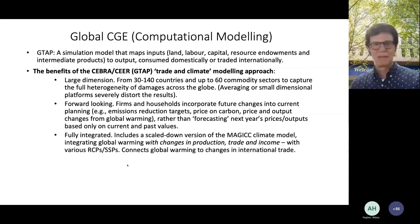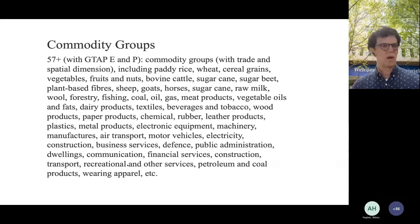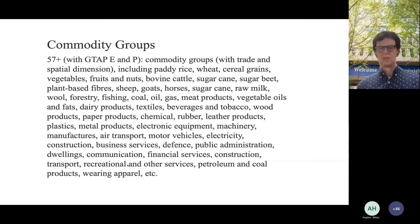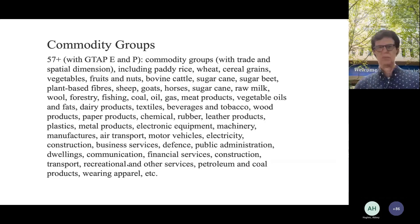There are approximately 57 to 65 different commodity groups in the model, depending on the version used. It's pretty heavy in agriculture, which is good for biosecurity concerns, but it also covers manufacturing, energy production including fossil fuels and renewables, and all kinds of services. We track all of these across all countries — mapping inputs like land, labor, capital, resources, and intermediate goods into outputs, which are either consumed domestically or traded overseas.